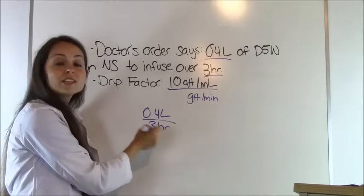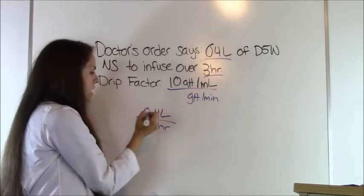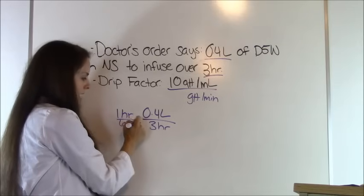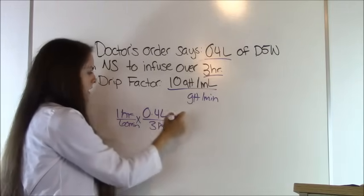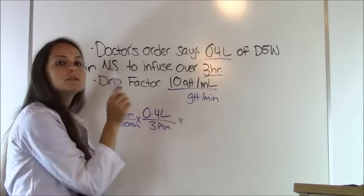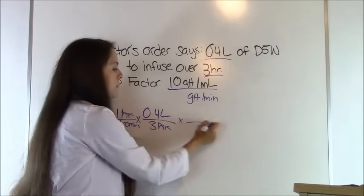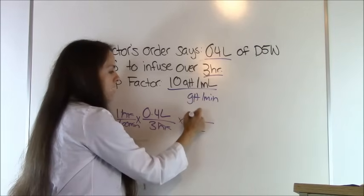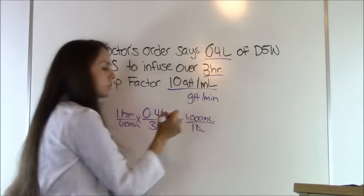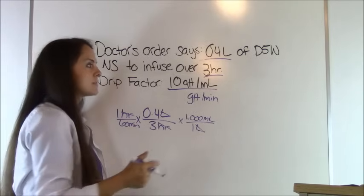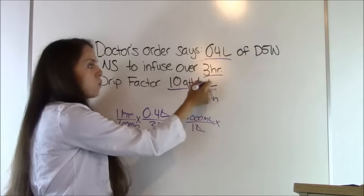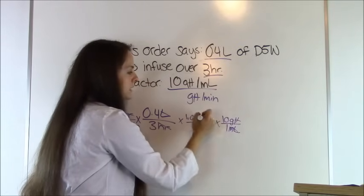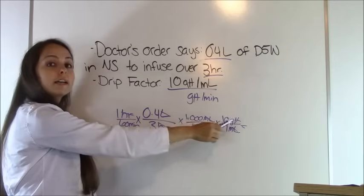We need to convert hours to minutes: 1 hour equals 60 minutes, canceling out hours. We're still in liters, so we convert: 1 liter equals 1,000 milliliters, canceling liters. Now we apply our drip factor: 1 milliliter equals 10 drops, which cancels milliliters. We're already in drops per minute — that's the only thing left.